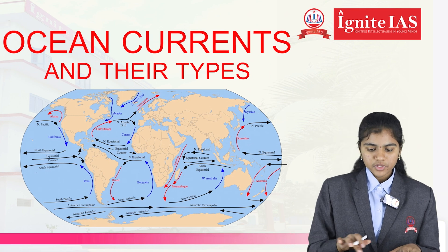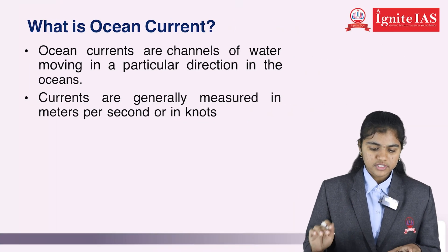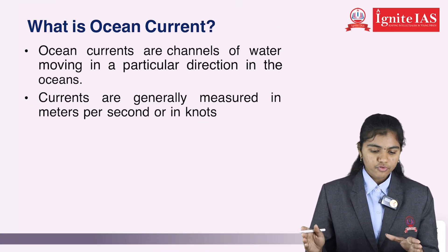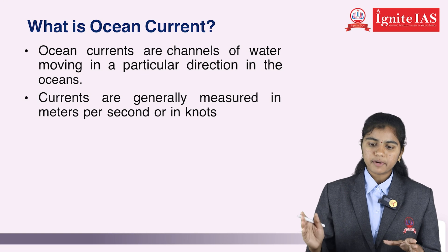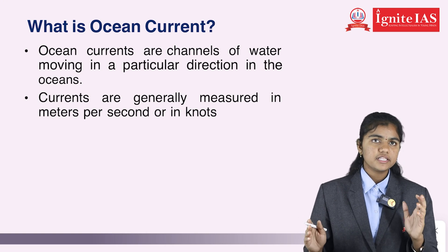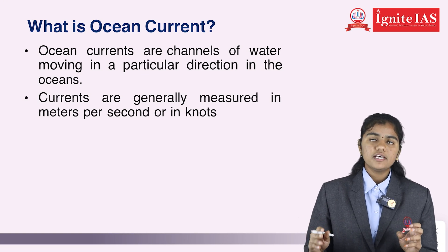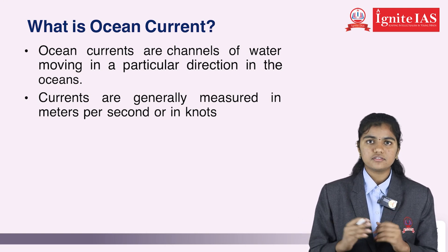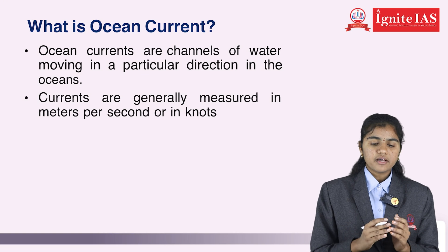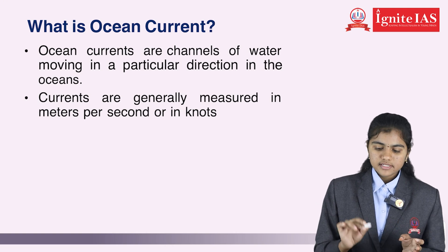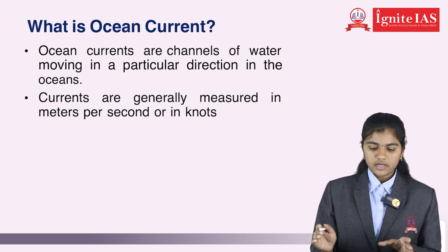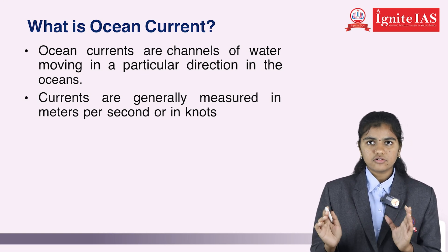First of all, what are ocean currents? Ocean currents are channels of water moving in a particular direction in the oceans. Simply, ocean currents are like rivers in the oceans. Currents are generally measured in meters per second or in knots.